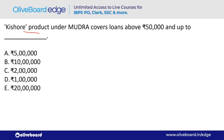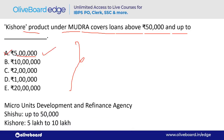The Kishore product under Mudra covers loans above ₹50,000 and up to how much? The answer is ₹5 lakh. Under Mudra: Shishu covers up to ₹50,000, Kishore covers ₹50,000 to ₹5 lakh, and Tarun covers ₹5 lakh to ₹10 lakh — maximum loan limit in Mudra is ₹10 lakh.